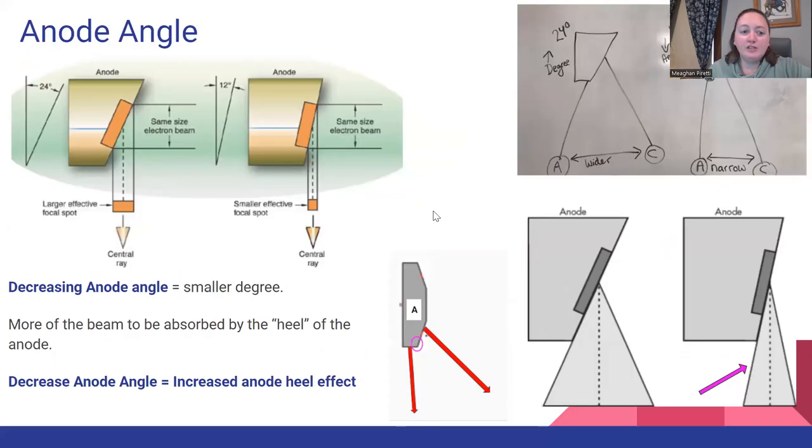These were just some images that I drew, some I found online, but the degree of angle on the anode will also change your anode heel effect. It'll either increase or decrease it.